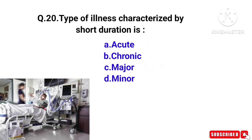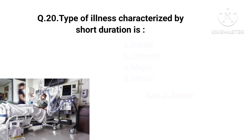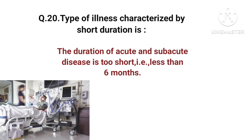Type of illness characterized by short duration is acute illness. The duration of acute and sub-acute illnesses is short — that is, less than 6 months.